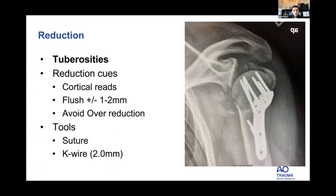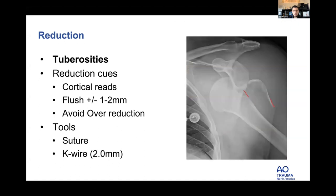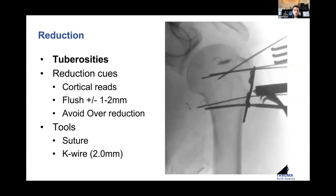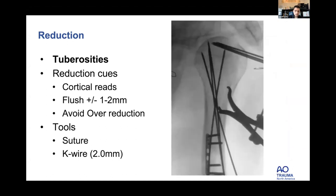For the tuberosities, we want to avoid either escape or malreduction. It's great when there's a cortical read so you can see exactly where the fragment belongs and confirm anatomic reduction. Sometimes the tuberosity lays flush with the humeral head, sometimes 1–2 mm above or below depending on patient anatomy. Wire them in place once reduced. I use strong non-absorbable braided sutures placed at the bone-tendon junction of the greater and lesser tuberosities with the rotator cuff, reducing them back to the plate.